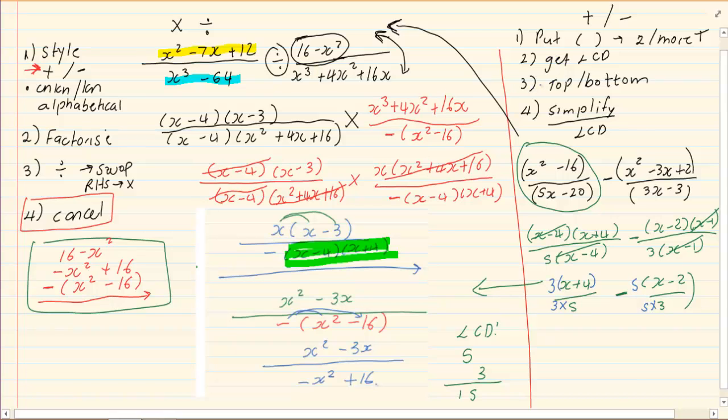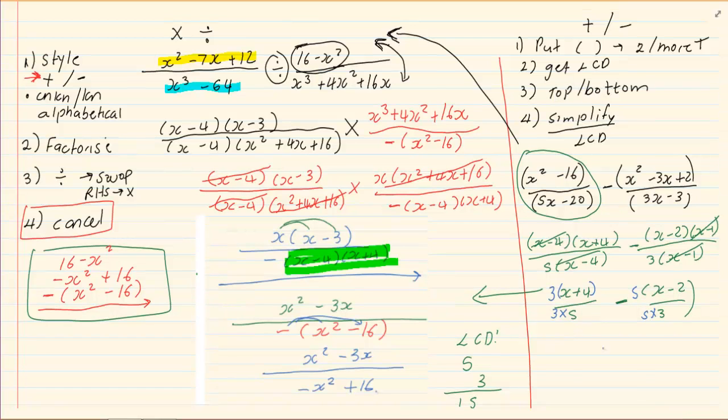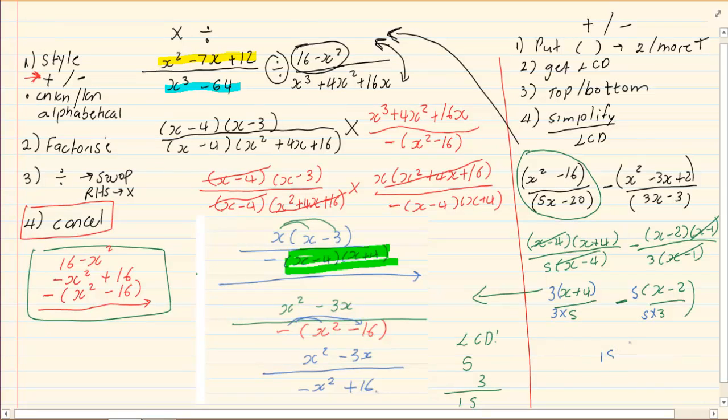Now, once we multiply the top with what is at the bottom and the bottom with what is at the top, we are going to rewrite it over 1 LCD. Remembering our simplifying means get rid of brackets. We have 3x plus 12 minus 5x plus 10 all over the same LCD which is 15.